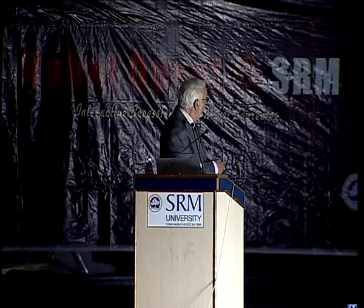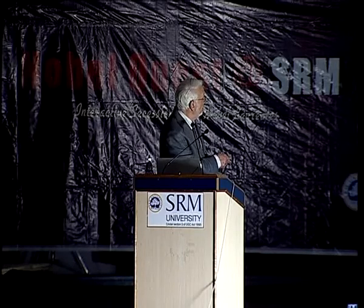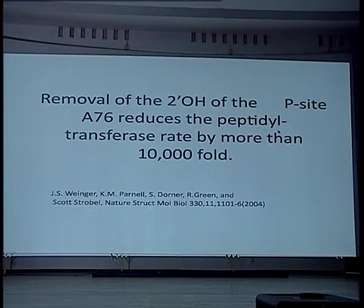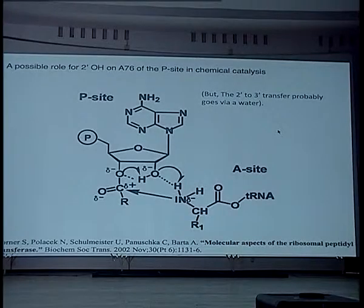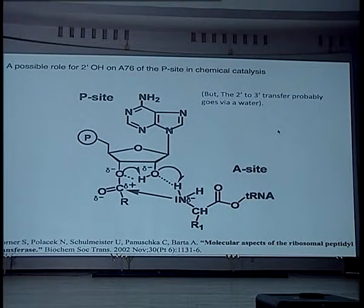What was done by Scott Stobel's lab at Yale and Rachel Green at Johns Hopkins is they removed that 2' hydroxyl and asked, what happens? And what they found is the rate went down 10,000-fold. So clearly that's very important. Andrea Bartha in Austria concluded, based on her studies as well as our early structures, that what was happening is that the 2' hydroxyl is picking up a proton from the attacking alpha-amino group, acting as what's called a proton shuttle member. That's the detailed chemistry.